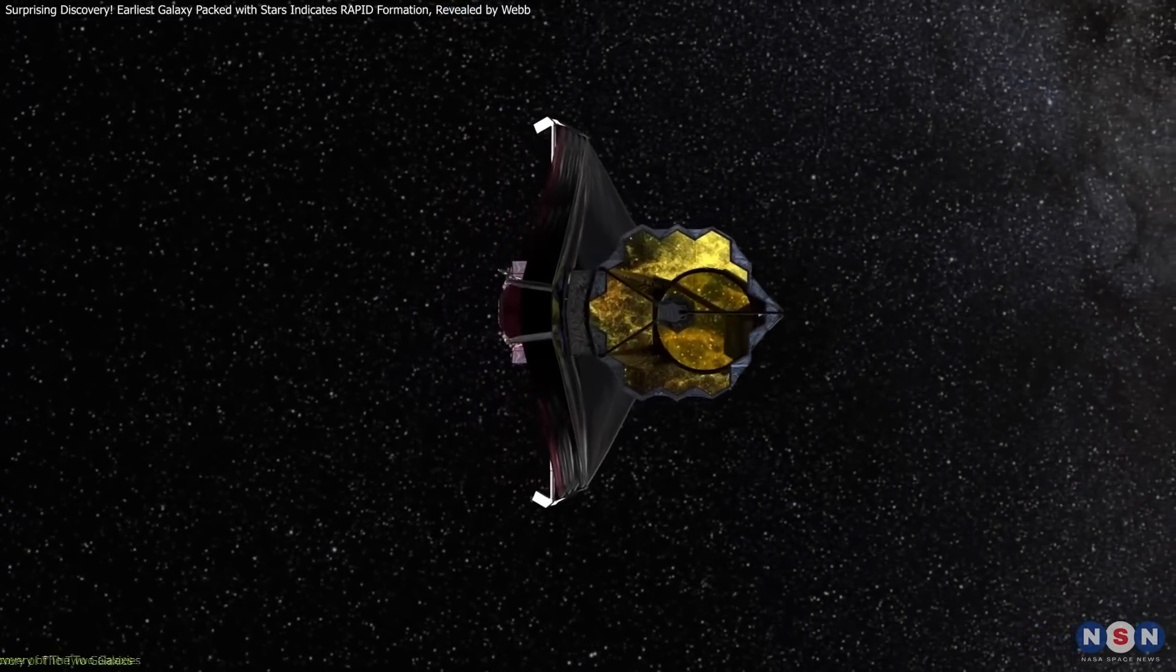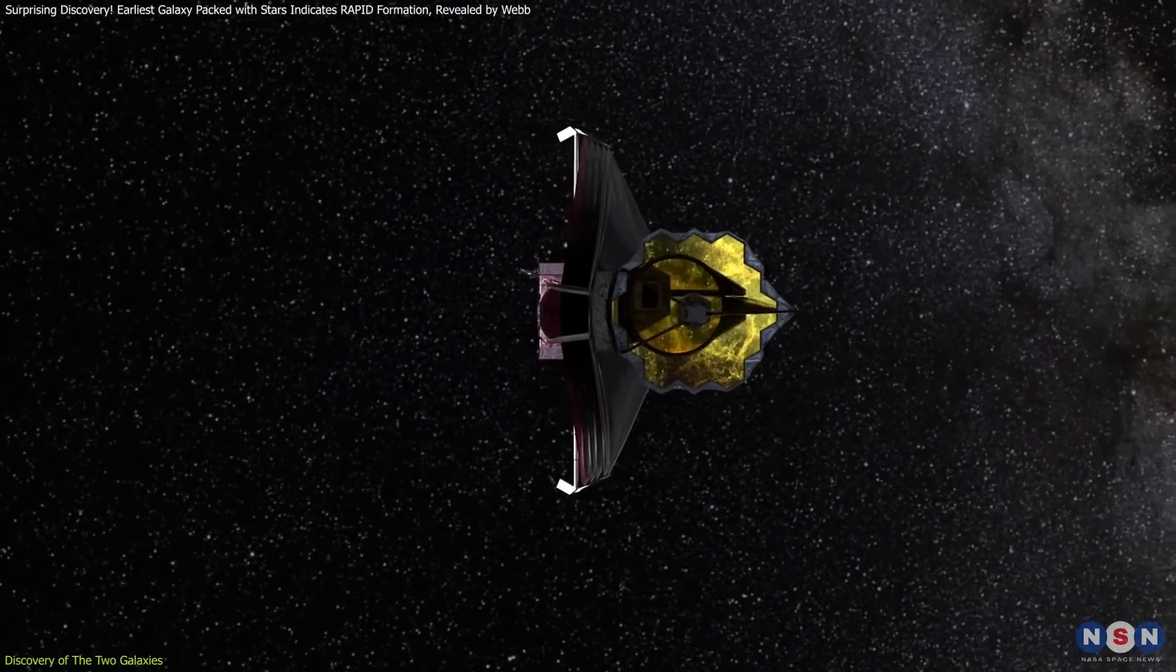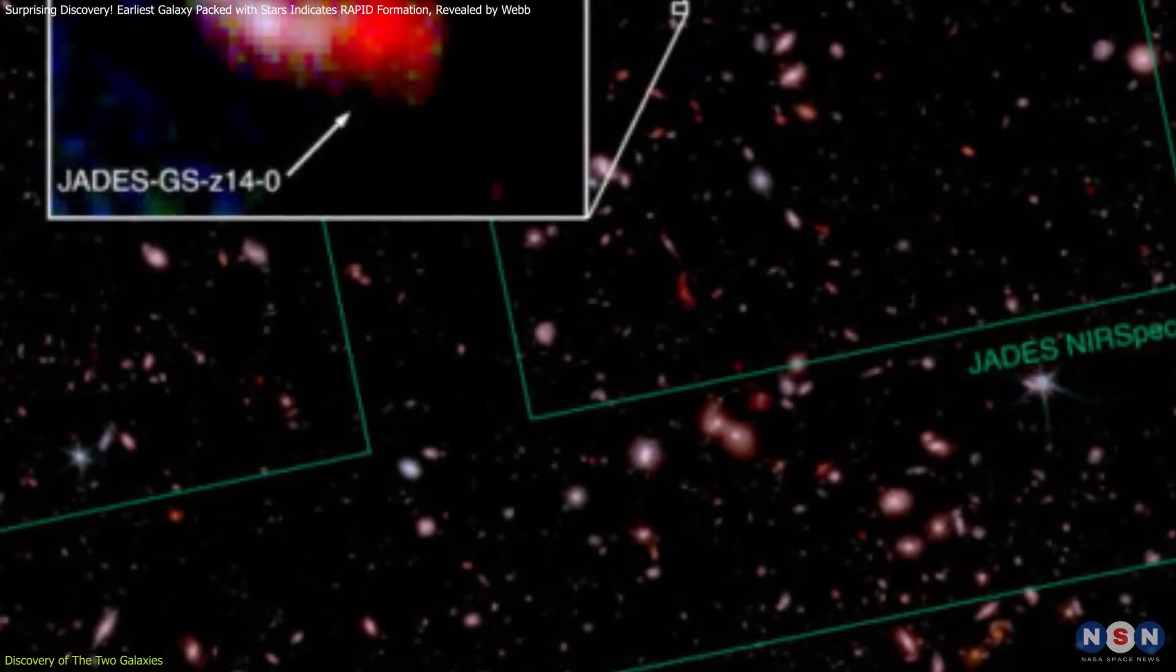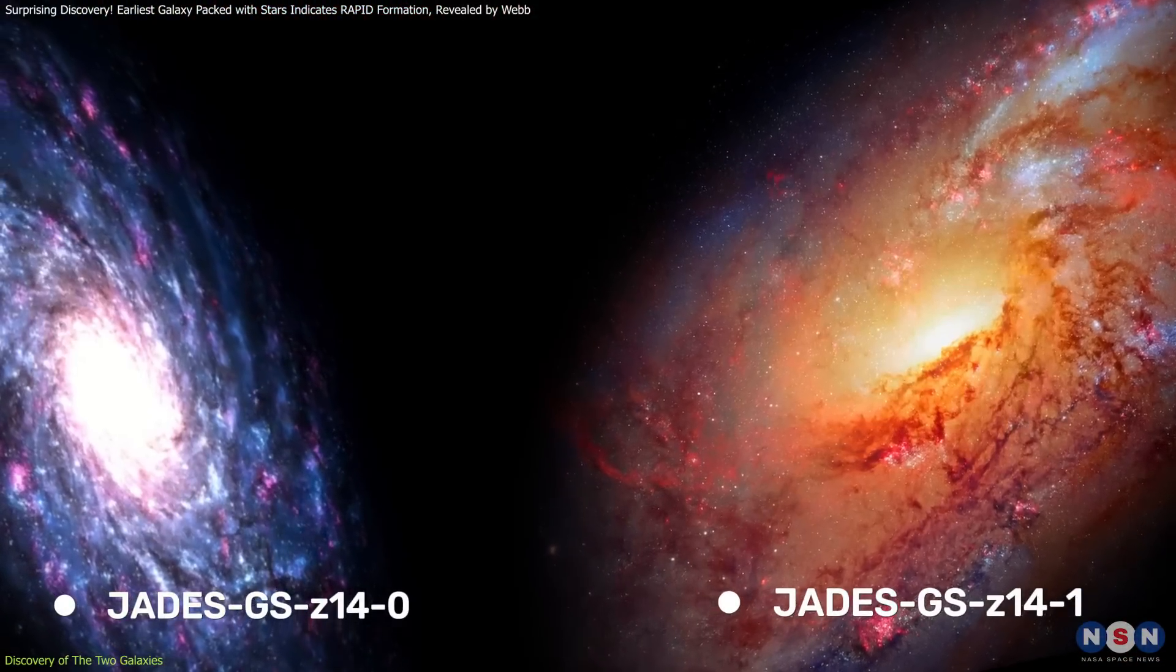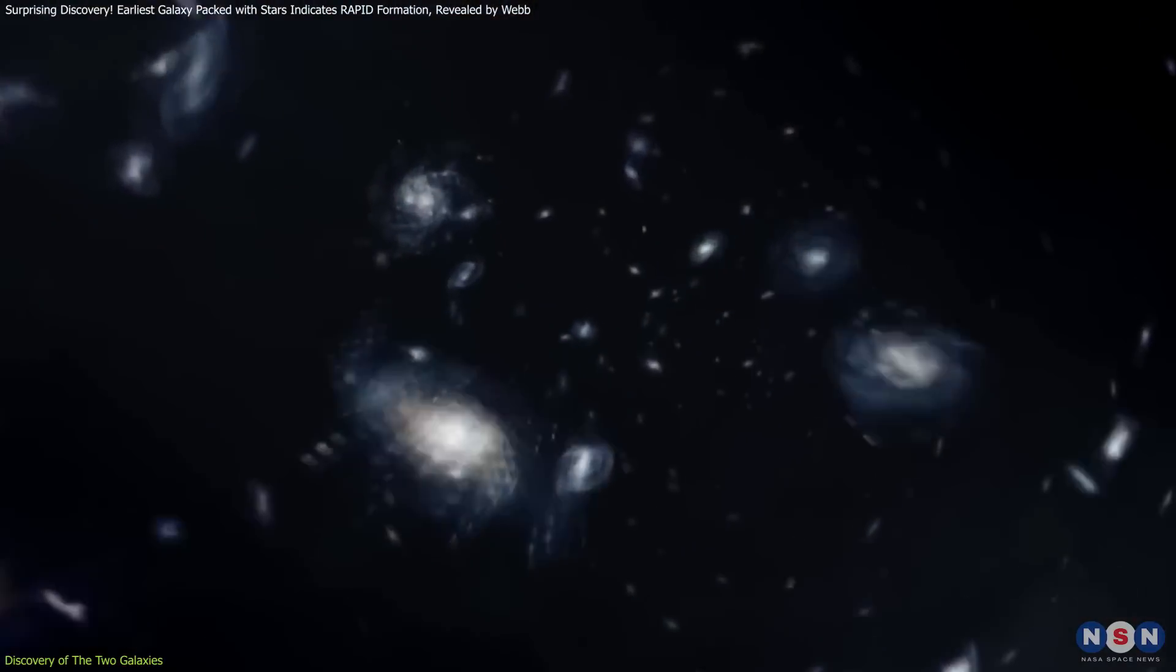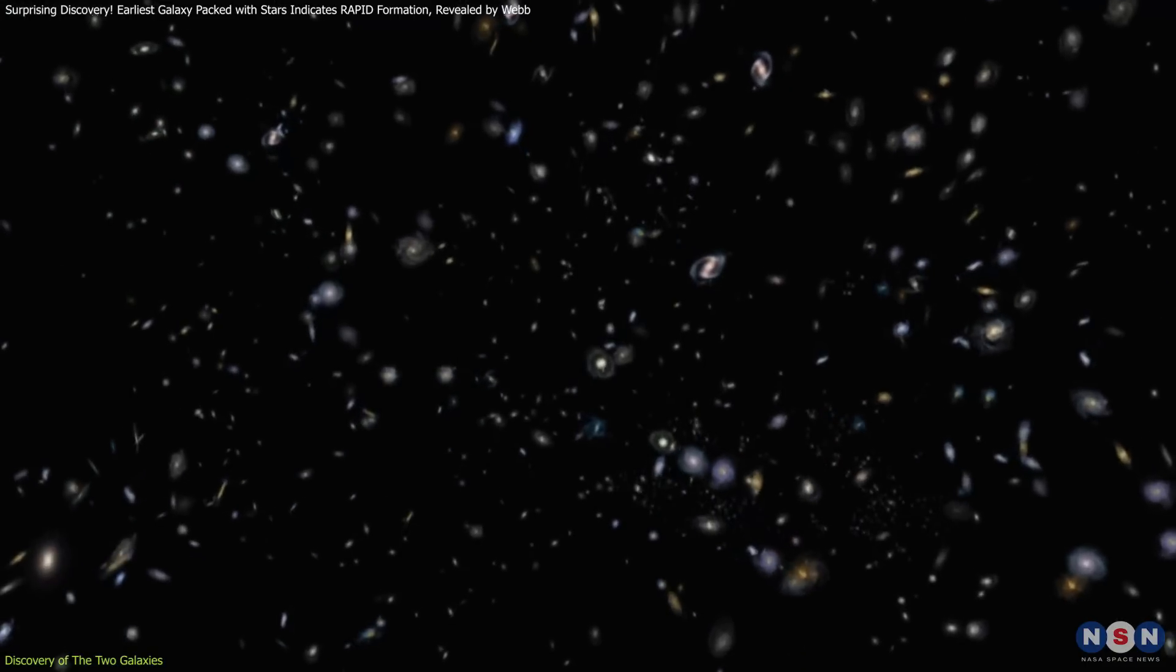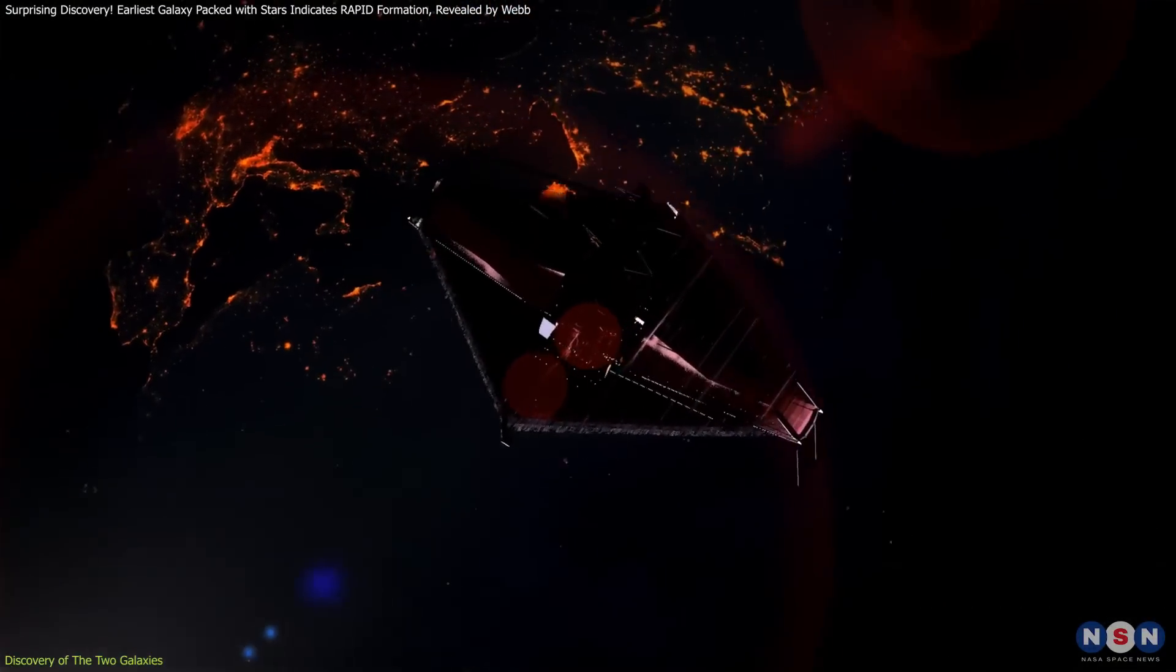The James Webb Space Telescope has revolutionized our understanding of the cosmos with its discovery of two of the earliest and most distant galaxies ever observed. Their names start with JADES. These galaxies were found approximately 300 million years after the Big Bang. They give us a unique look into the universe's early days. This discovery extends our cosmic reach by 40%, pushing the boundaries of what we previously thought possible within the first 18 months of Webb's operation.